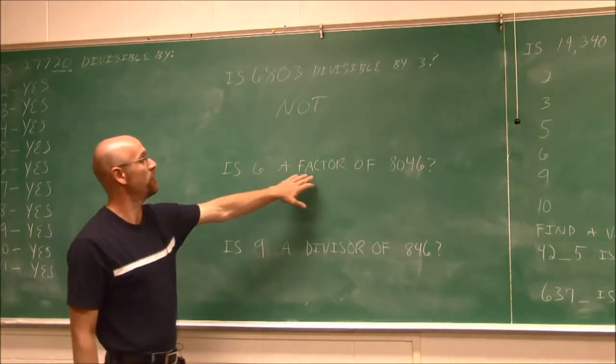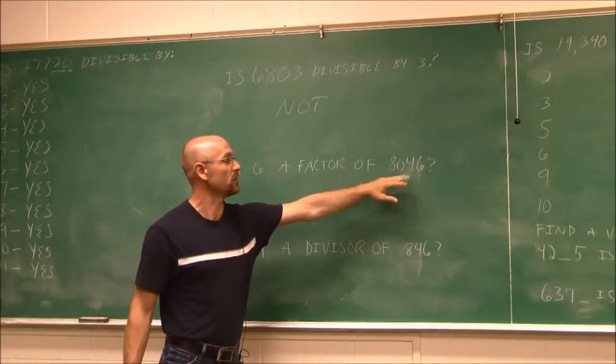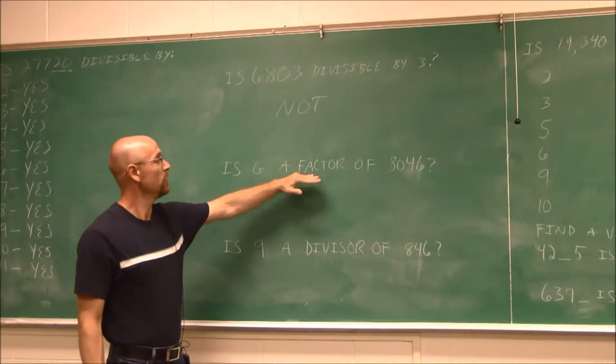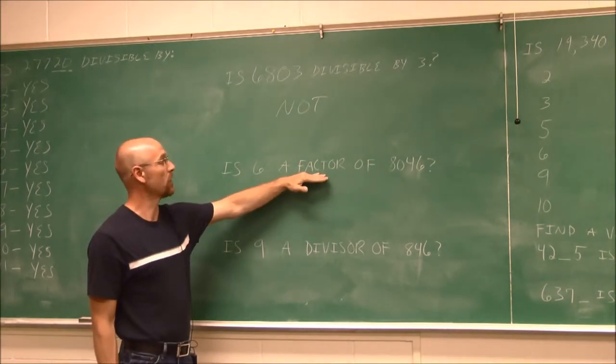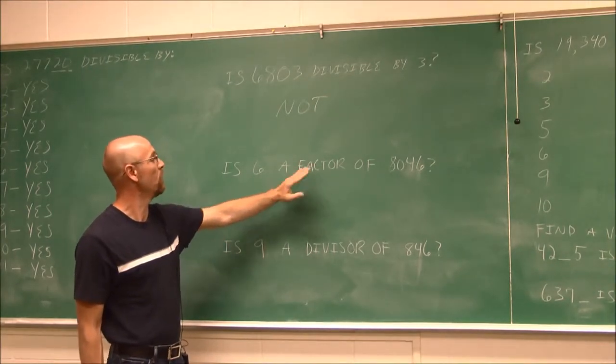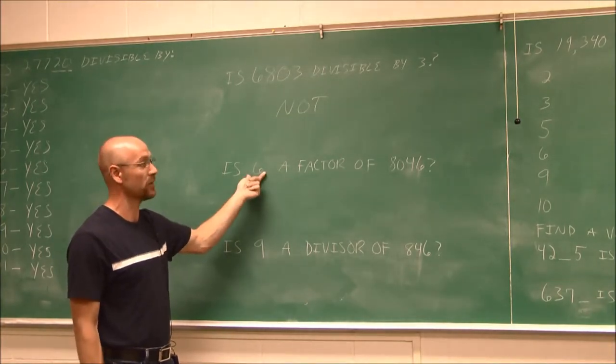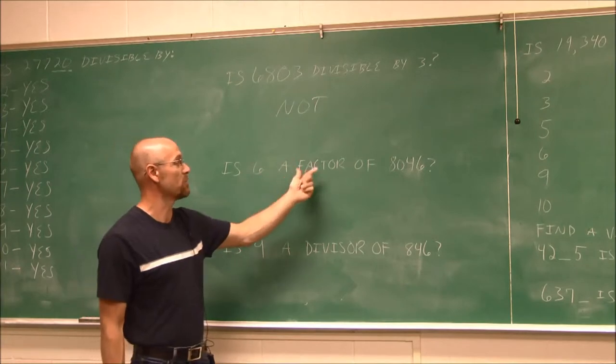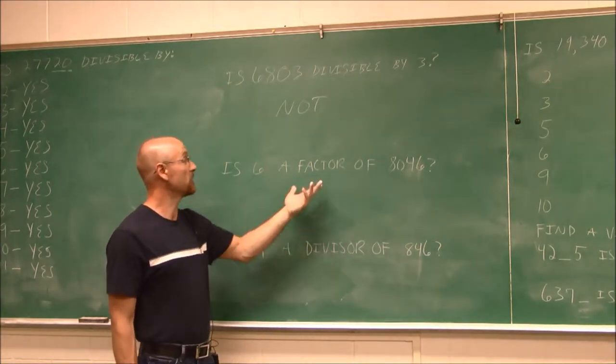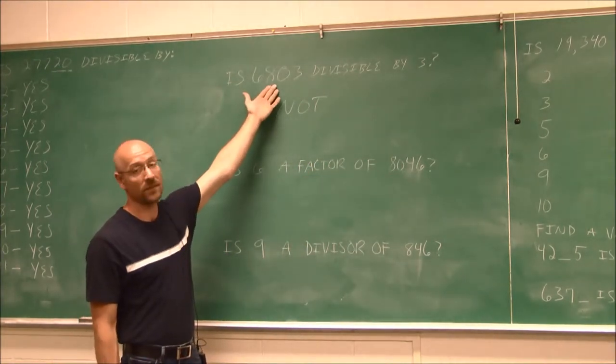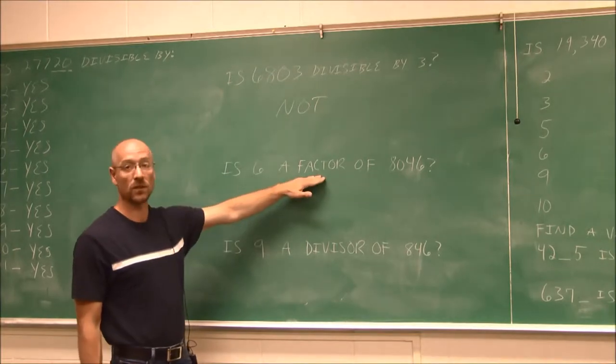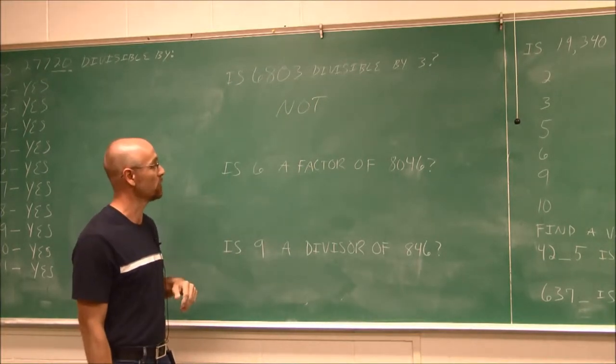Is 6 a factor of 8,046? Now, factor, if we recall from chapter 1, means if I multiply this by something else, it is a factor. So it's saying, is this times something equal to that? It's the same thing as asking, is it divisible? But it's a different term. You have to be familiar with this terminology.